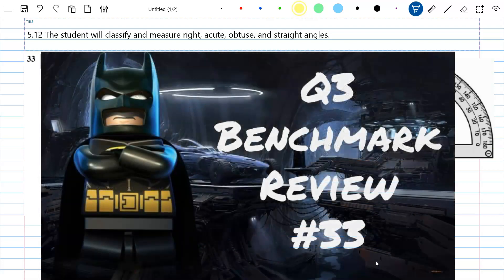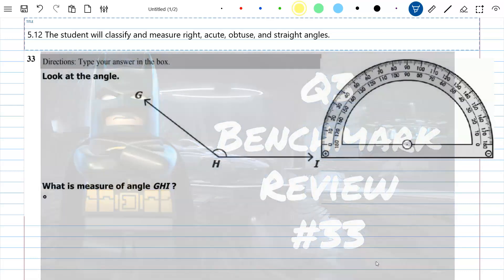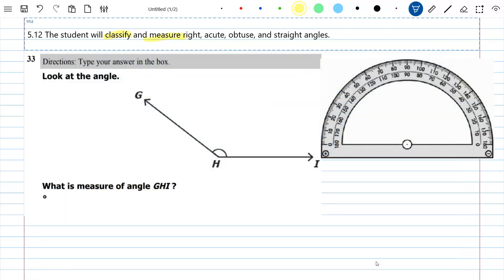We're back with our Q3 math benchmark review, this is number 33. It's SOL 512 again - the student will classify and measure right, acute, obtuse, and straight angles. In this case we are finally measuring. This was a TEI item, so the directions were to type your answer in the box.